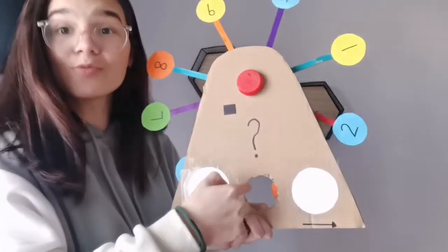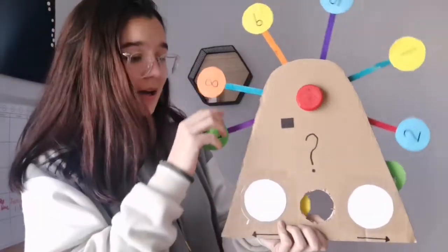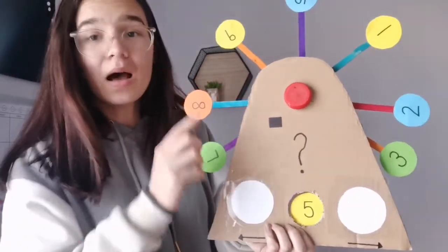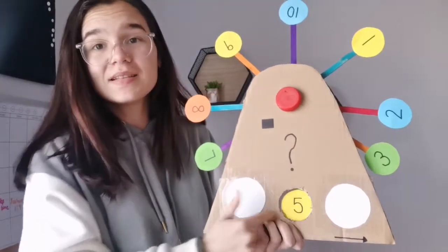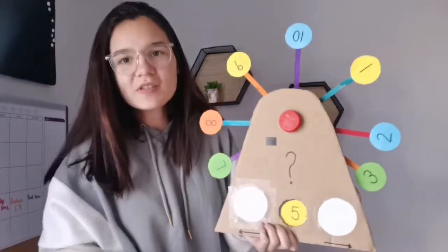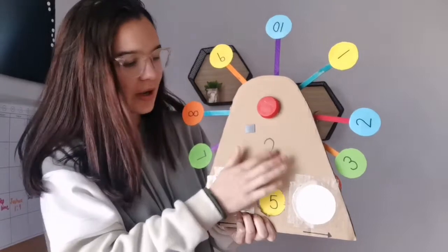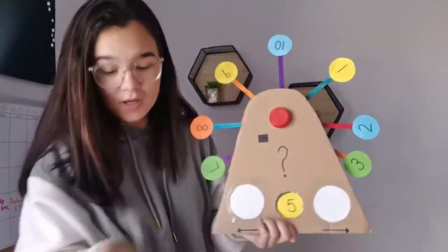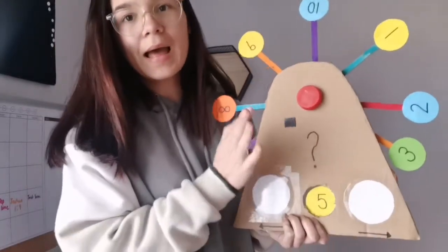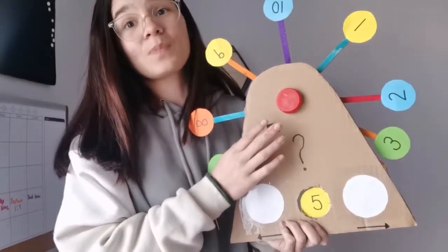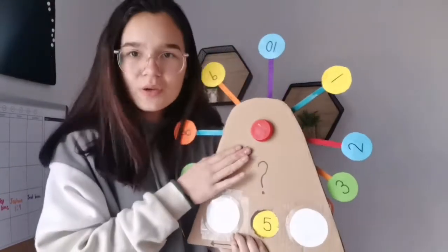Once I cut that out, I made sure this round circle was exactly the same size as my numbers so you can see them perfectly. I added this question mark as decoration and I added a magnet because my whiteboard marker is magnetic so you can stick it on there and store it.